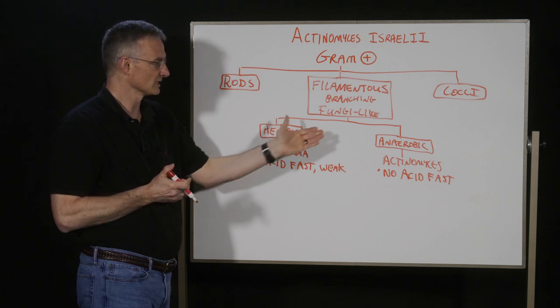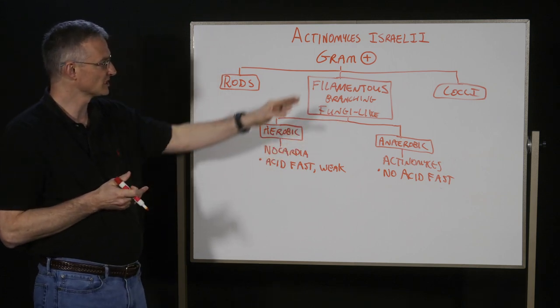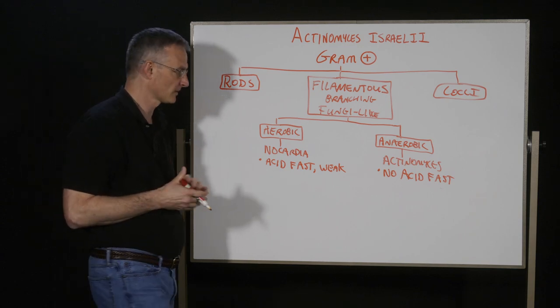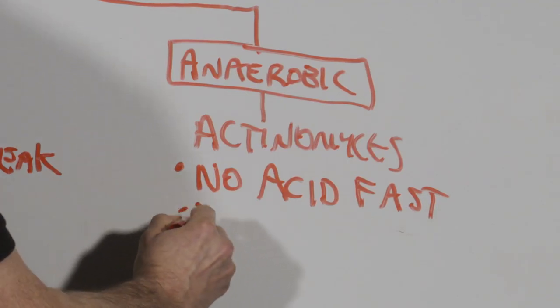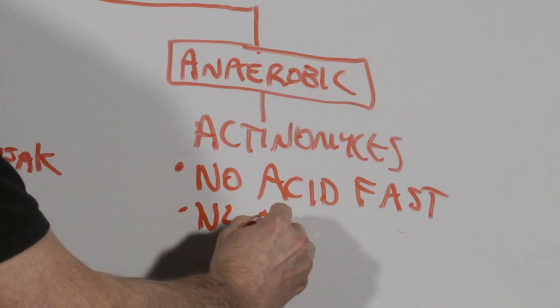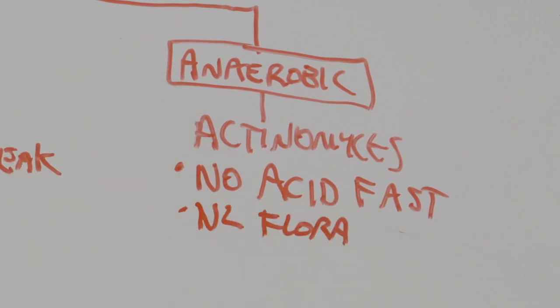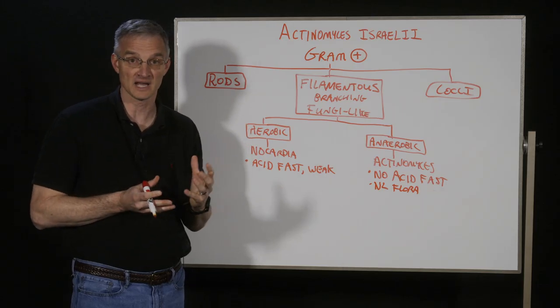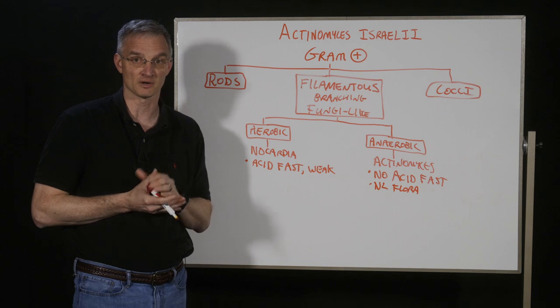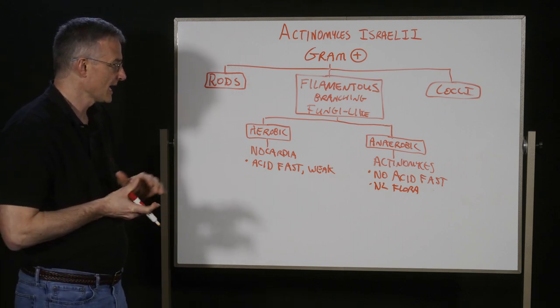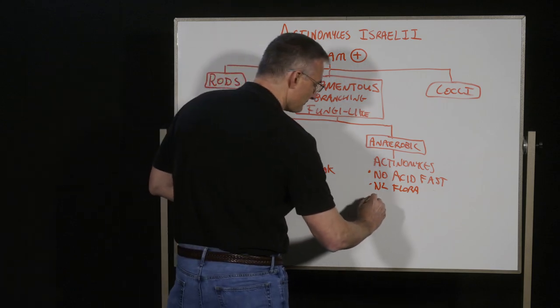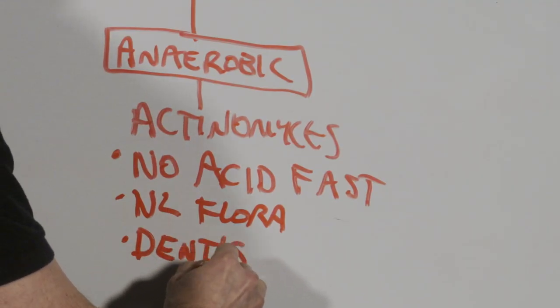So the next thing is, what other characteristics do you need to know about actinomyces to answer board questions about it? So some of the other things to remember is that it is a normal flora. It can be found in the mouth. It can be found in the GI tract, which of course the mouth would be part of that, or it can also be part of the reproductive tract.